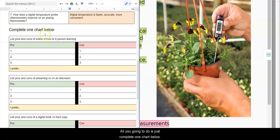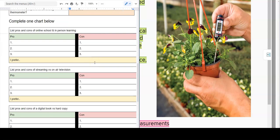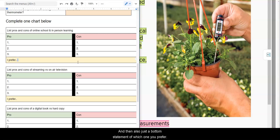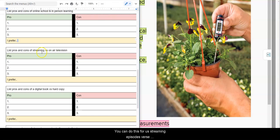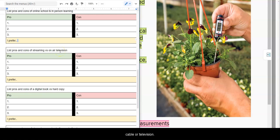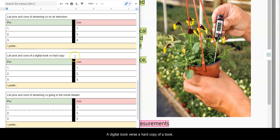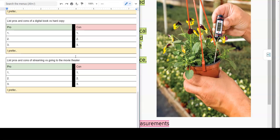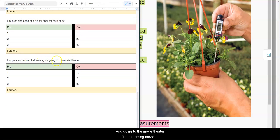The last section, all you're going to do is just complete one chart below. Pick between online learning or in-person learning and just list three pros and three cons. And then also just a bottom statement of which one you prefer. You can do this for streaming episodes versus cable or television, a digital book versus a hard copy of a book, and going to the movie theater versus streaming a movie at home. Just pick one side and list the pros and cons and which one you prefer.